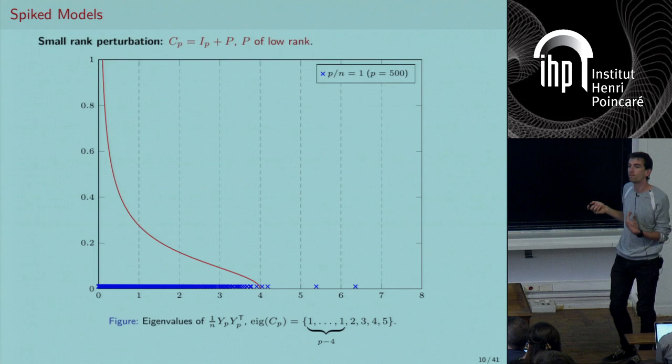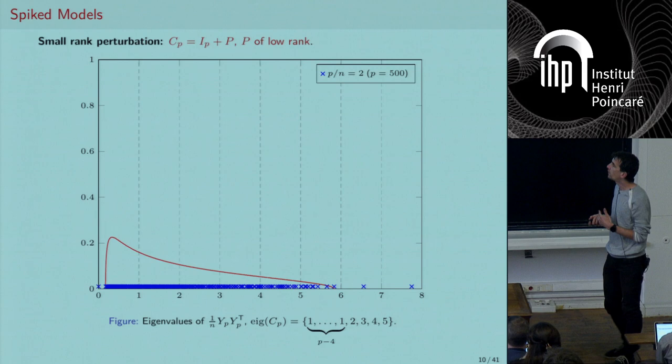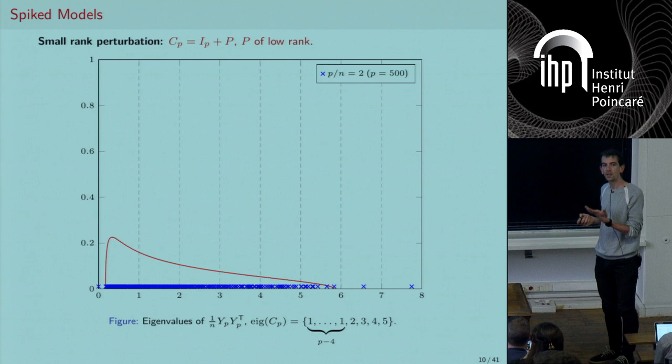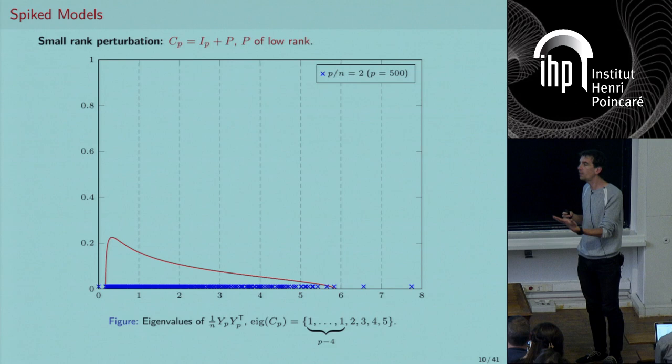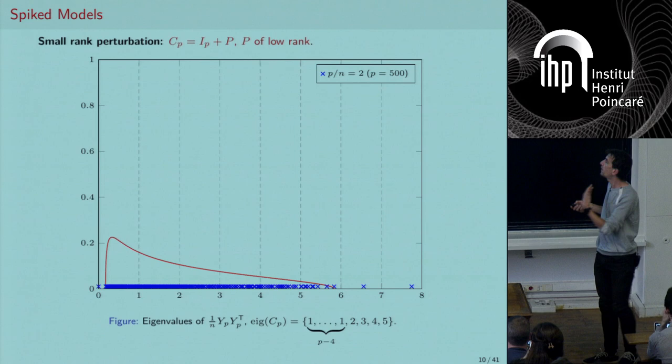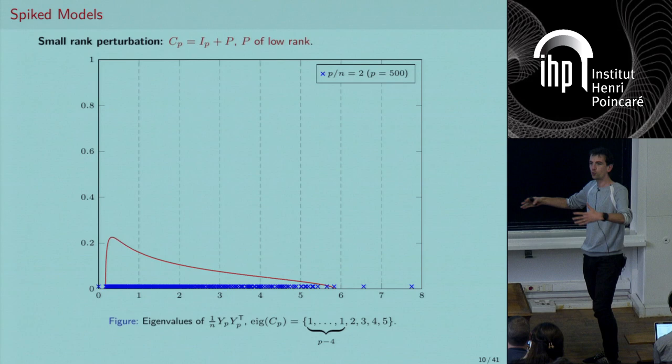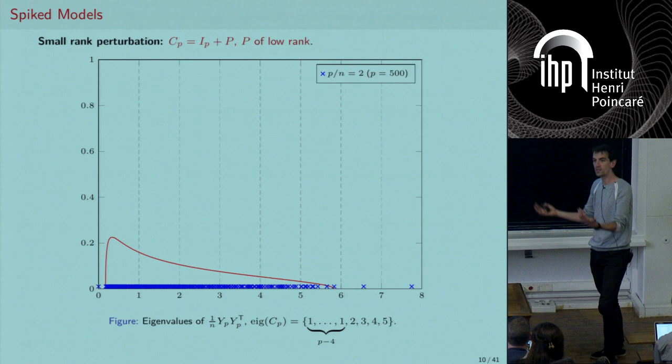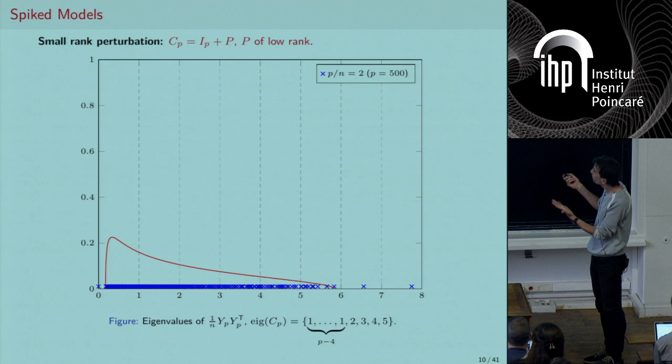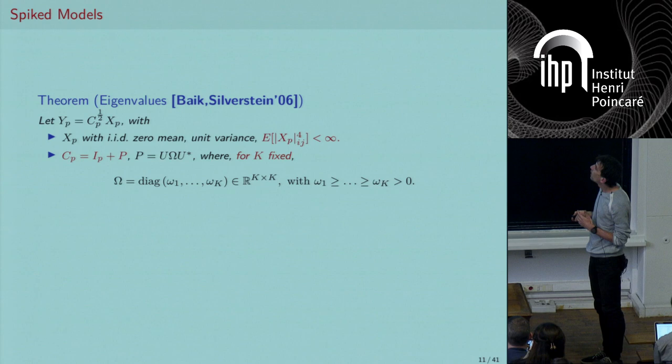At p/n = 1, only two eigenvalues are seen outside. As I keep increasing the ratio, fewer and fewer are visible. This is the phenomenon called a phase transition: after a certain ratio p/n, you may no longer be able to see some eigenvalues. You lose information — the spectrum becomes equivalent to what you'd have with no information at all.